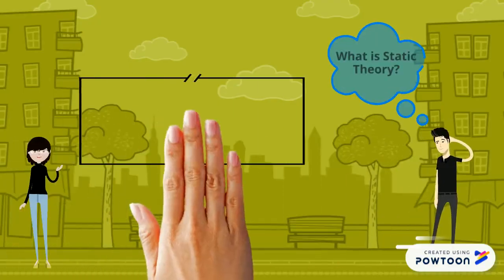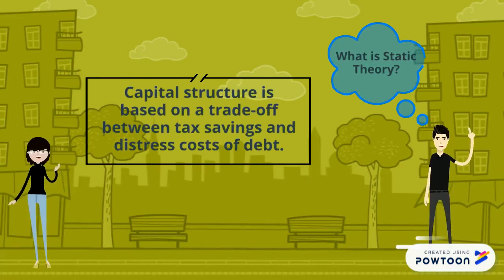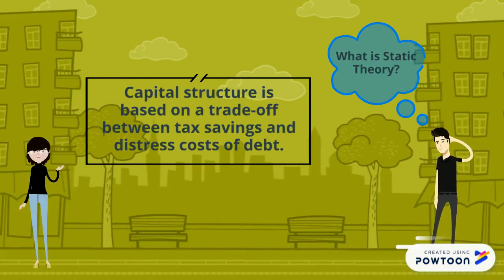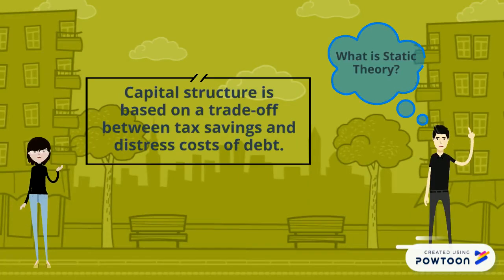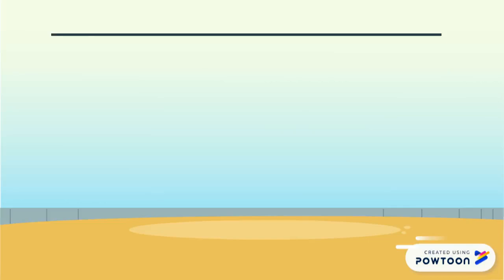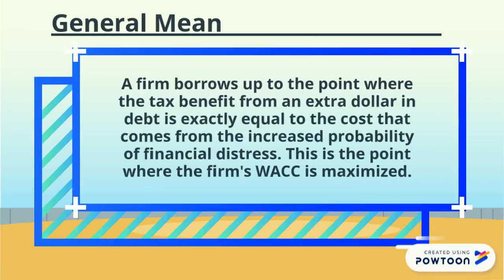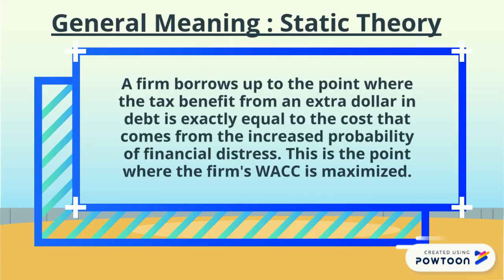Capital structure is based on the trade-off between tax savings and distress costs of debt. A firm goes up to the point where the tax benefit from an extra dollar in debt is exactly equal to the cost that comes from the increased probability of financial distress. This is the point where the firm's WACC is maximized.